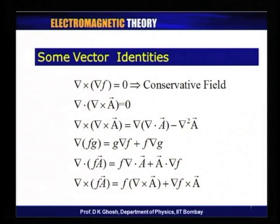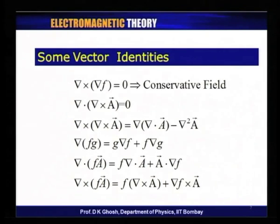I know that del cross A is a vector, but it can be shown that the divergence of the curl of a vector function is equal to zero. Remember, we had said earlier that if the curl of a vector field is zero, the field is said to be irrotational. If the divergence of a vector field is zero, it is said to be solenoidal. So what we are saying is: if I have a field del cross A, then such a vector field has to be a solenoidal field.